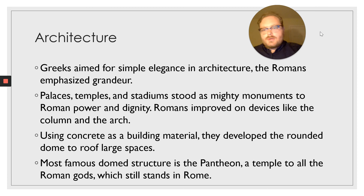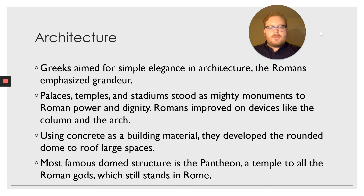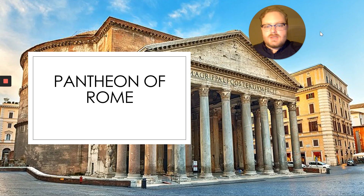In architecture, Greeks aimed for simple elegance while the Romans emphasized grandeur. Palaces, temples, and stadiums stood as monuments to Roman power and dignity. Romans improved on devices like the column and the arch, and they also innovated using concrete as a building material. They developed the rounded dome to roof large spaces, the most famous dome structure being the Pantheon — a temple to all the Roman gods which still stands in Rome today. Please work on your Horace poetry assignment in your Canvas portal.